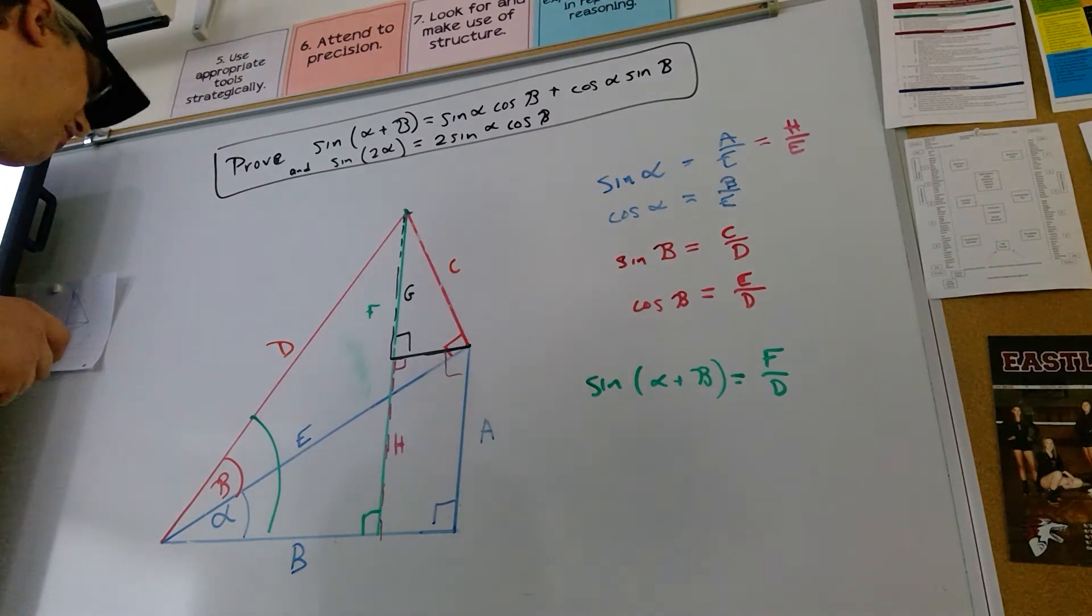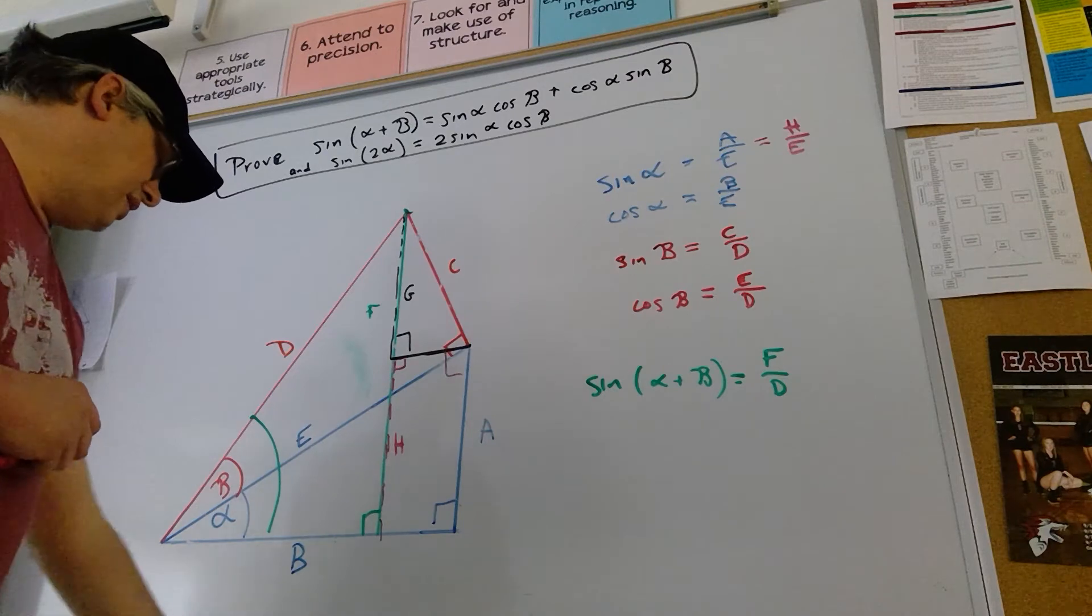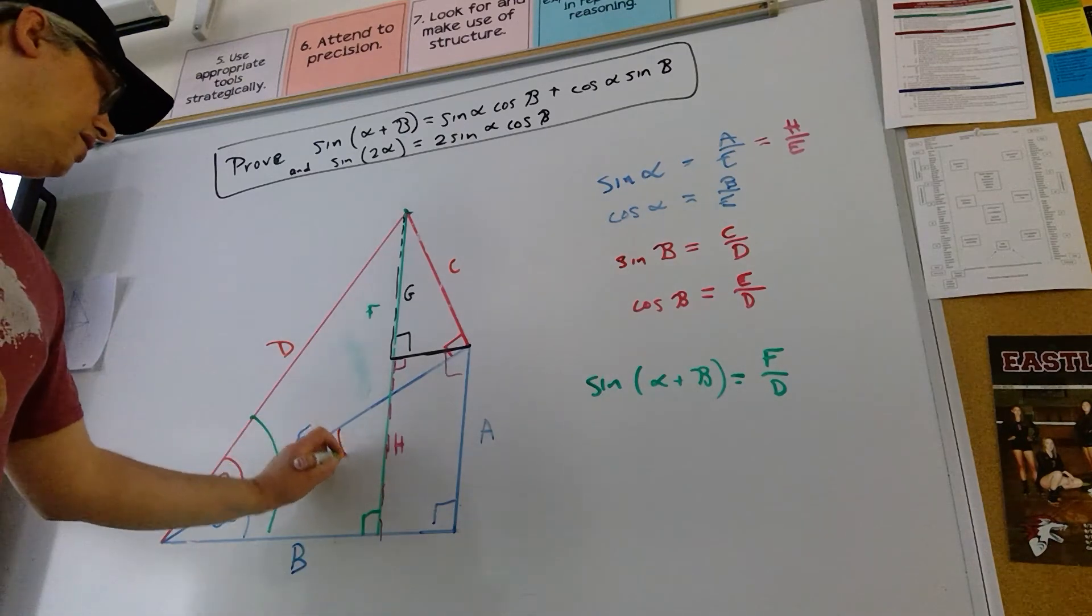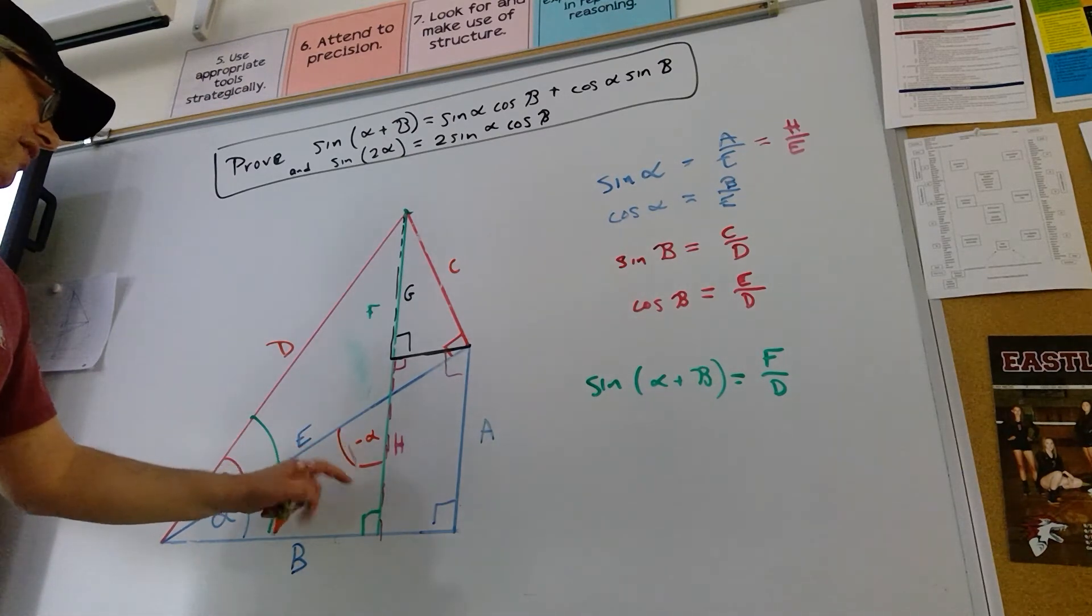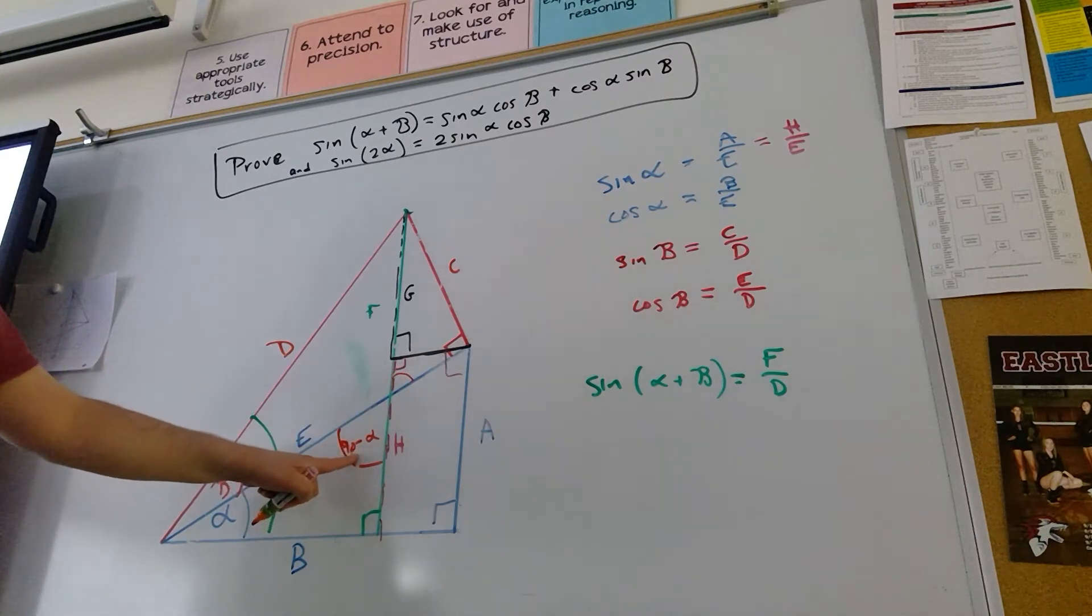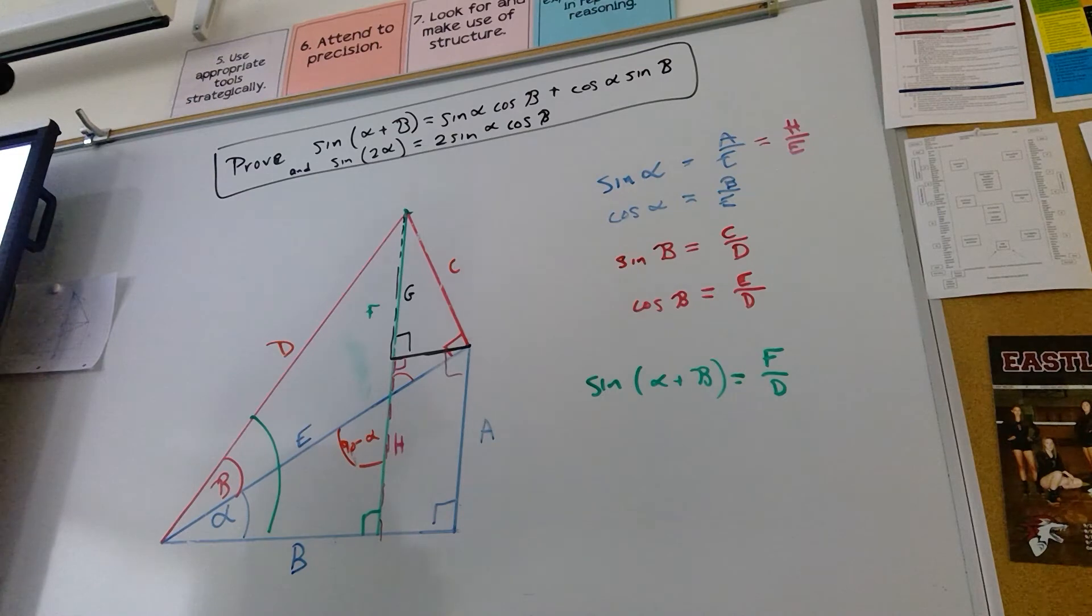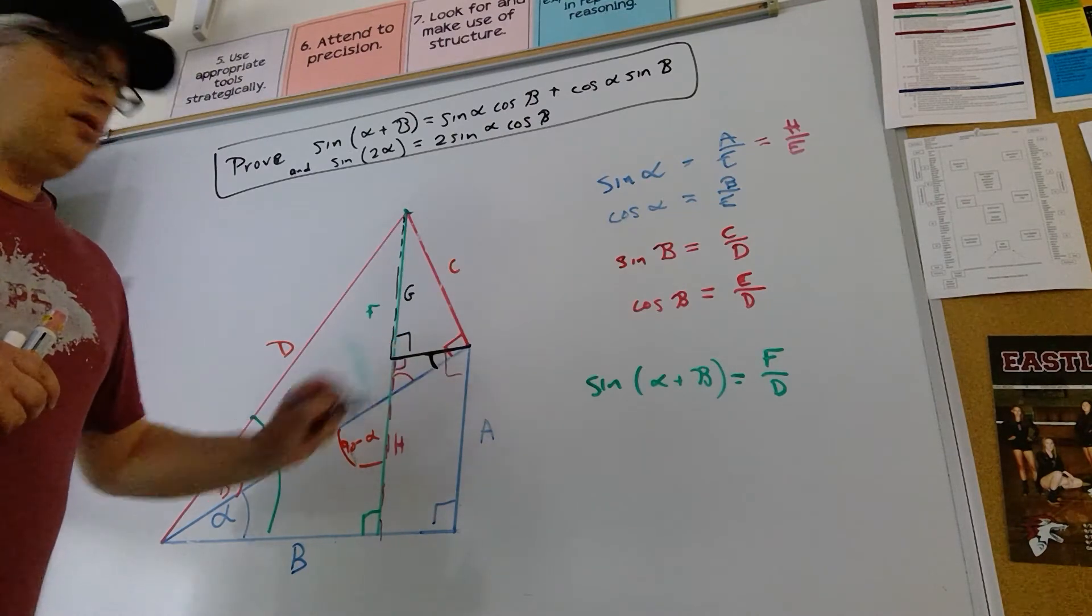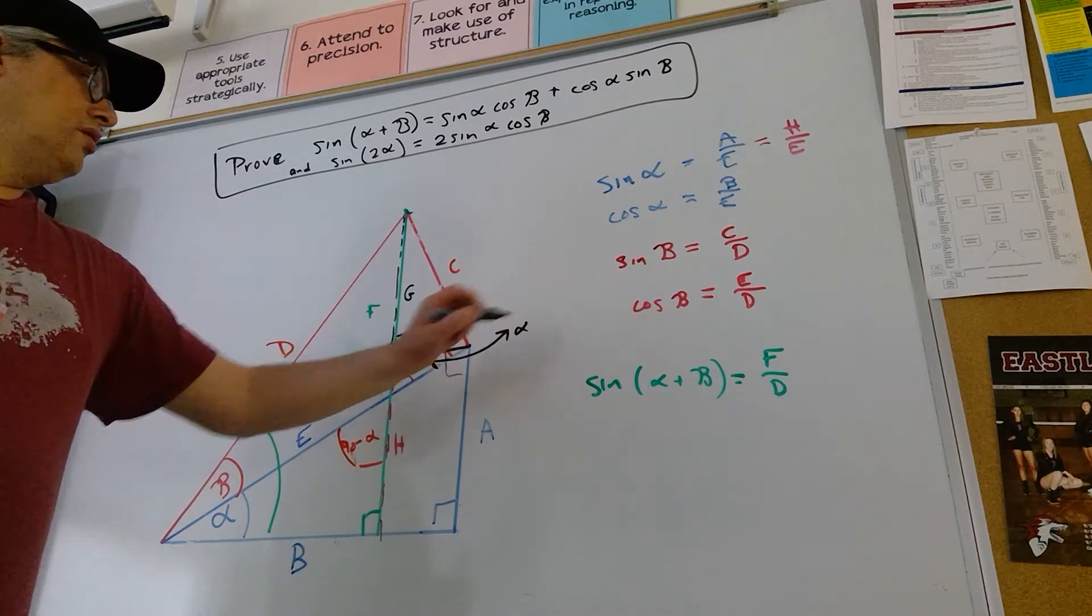Now, I'm going to do a little angle magic here. And this is also important. So I'm going to go through this fairly quickly. You might need to slow it down when you can. So this is alpha. This is 90. So this guy must be 90 minus alpha. And this guy is a vertical angle to 90 minus alpha. So this is also 90 minus alpha. Those are congruent. Well, what does that make this little guy from here to here? Well, if this is 90 minus alpha and this is 90, then that's just alpha. That is alpha.